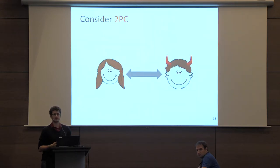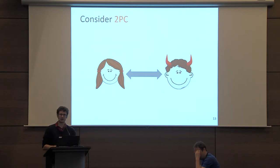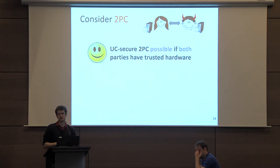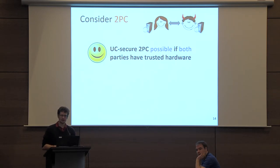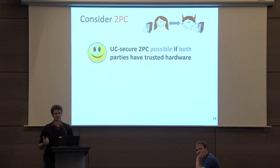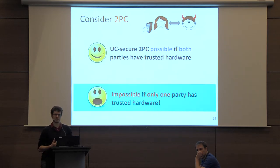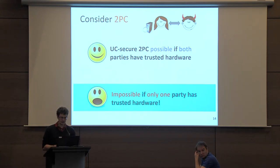For simplicity, consider just a two-party computation where Alice and Bob want to jointly compute some function of their inputs. We can show that when both parties have a secure processor, it's actually somewhat easy to get universally composable secure two-party computation. However, if one party doesn't have a secure processor — say Bob lost his — then we show that getting two-party computation in a UC secure way is impossible.